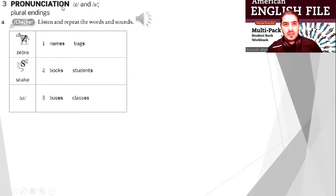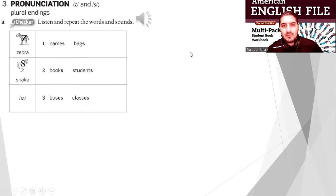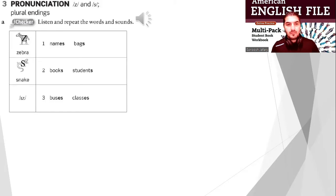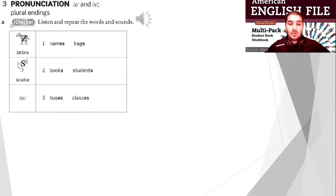Pronunciation — /z/ and /ɪz/ plural endings. Listen and repeat the words and sounds. One: names, bags. Two: books, students. Three: buses, classes. Great, very good!